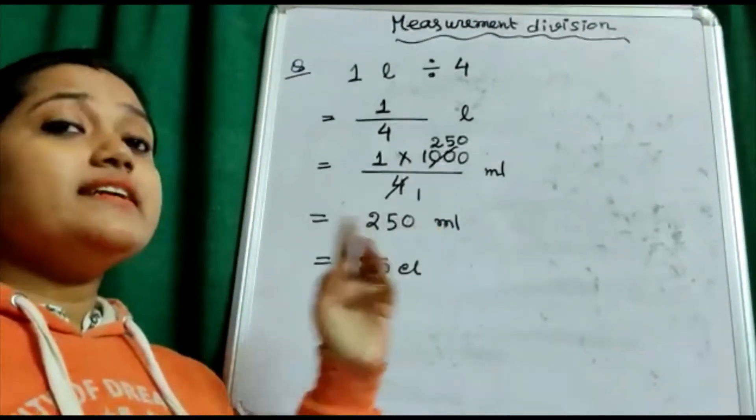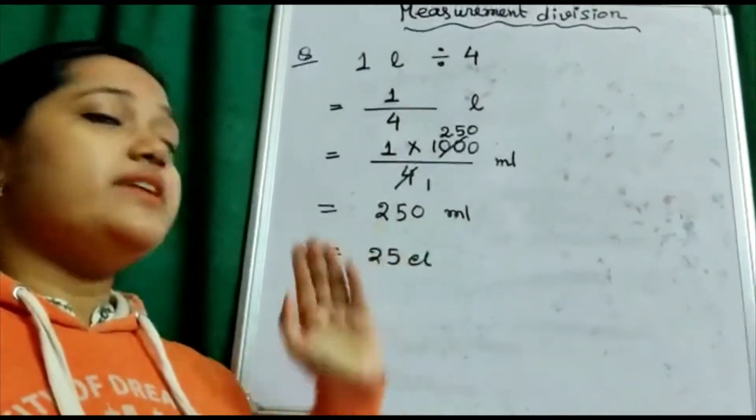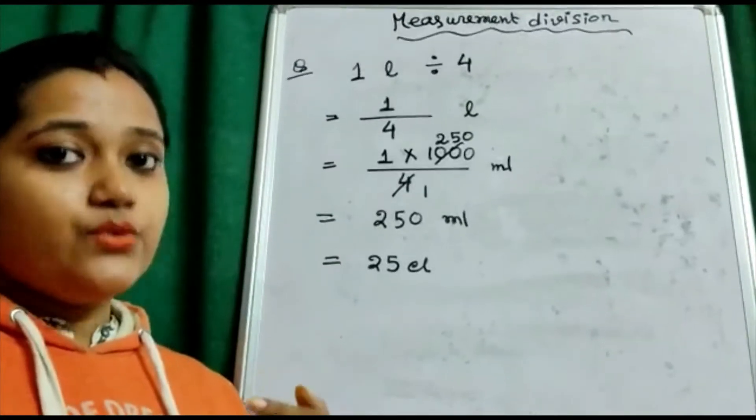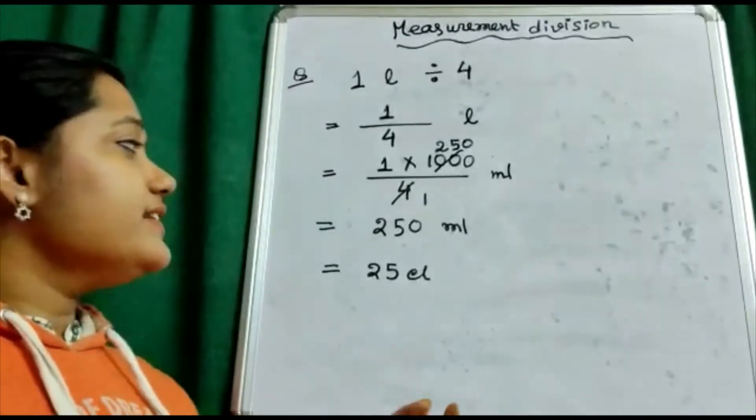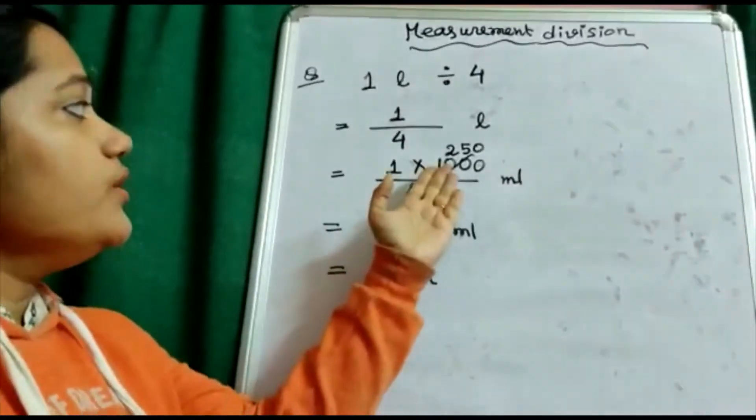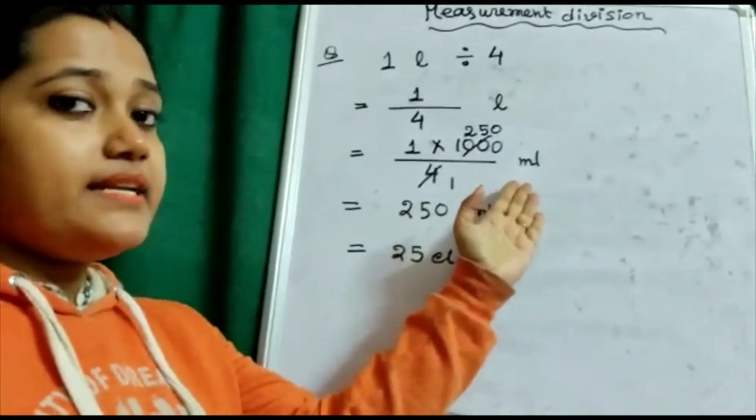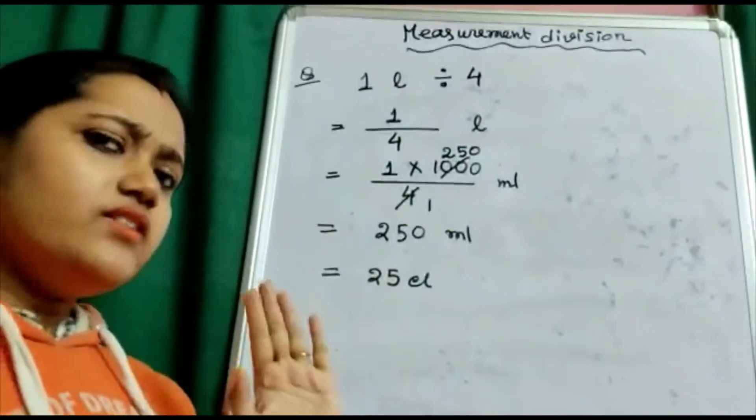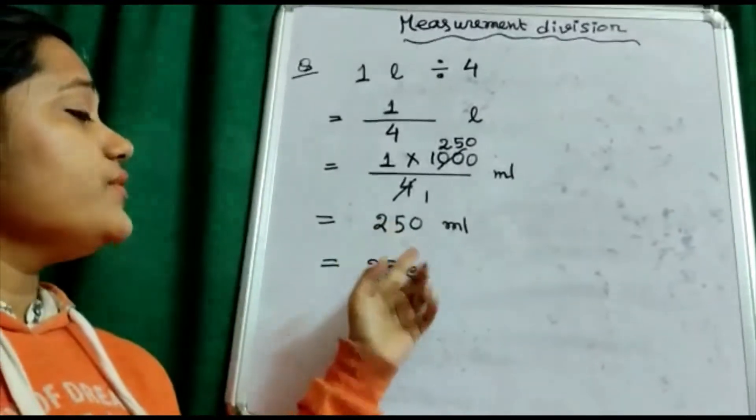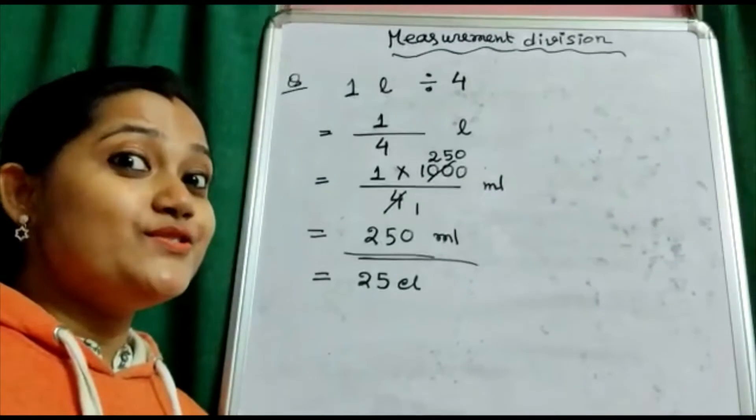But why have I done milliliter? Last day I have shown you how much is 250 milliliter, and milliliter is a very commonly used unit in our daily life. That's why I have preferred milliliter. So each one of your friends will get 250 milliliter of juice.